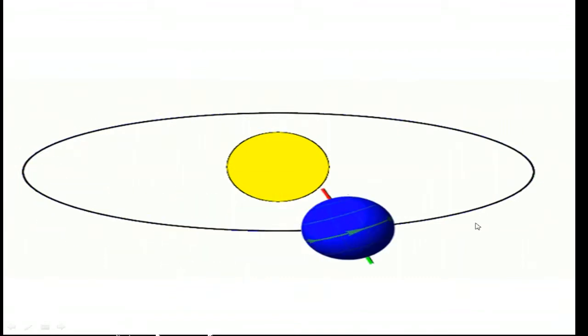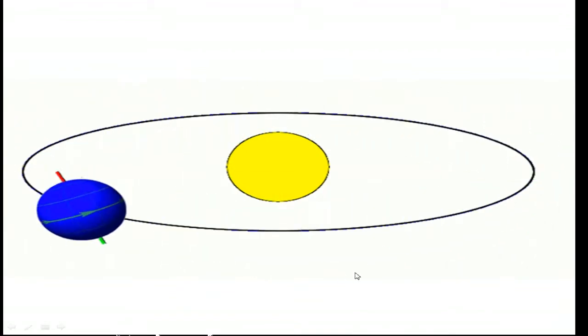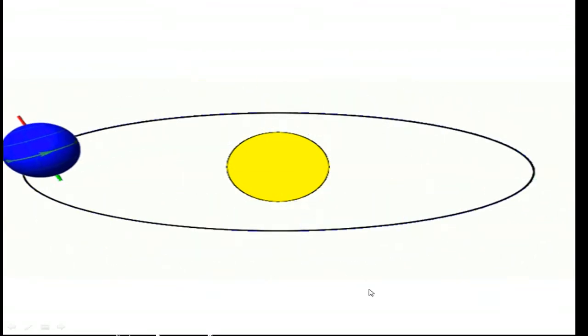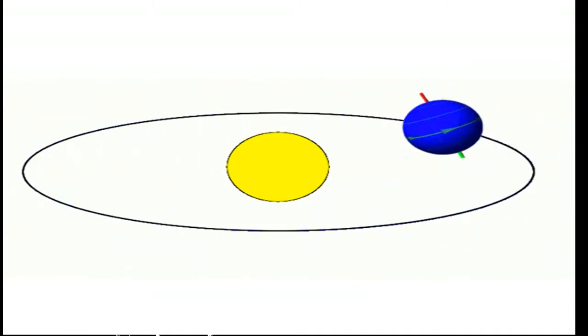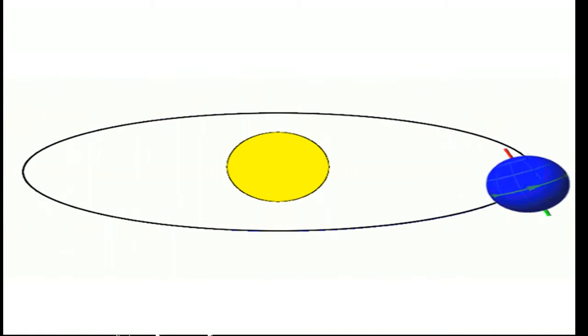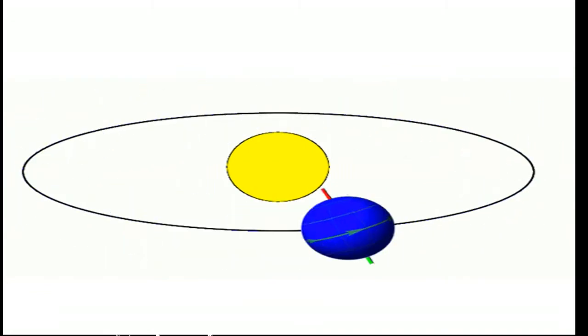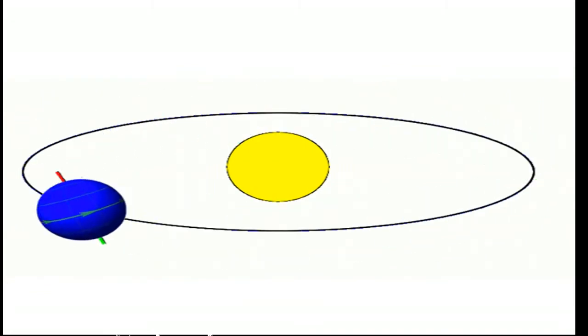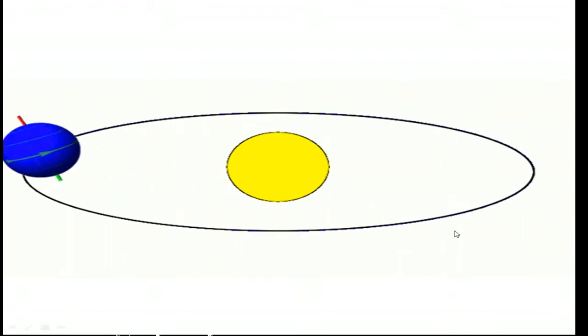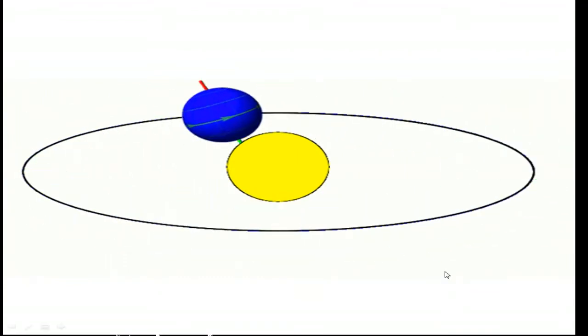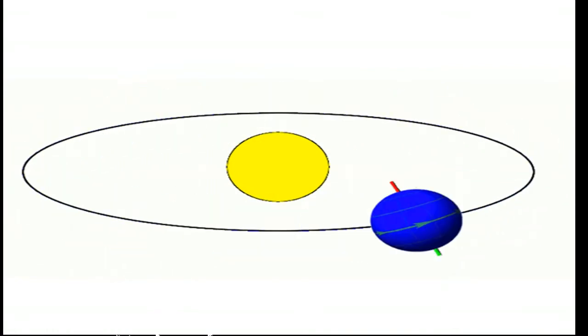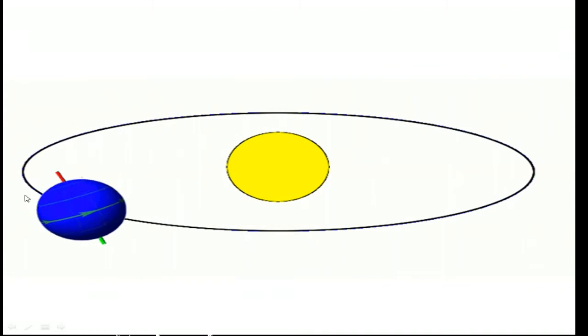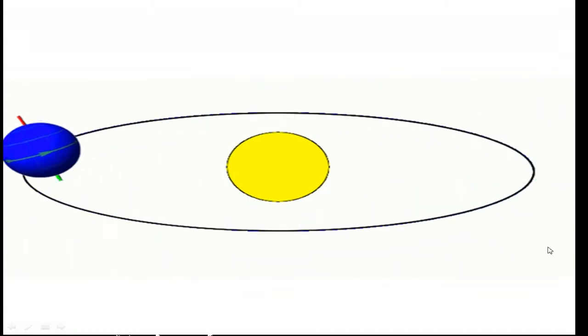the orbit of the Earth, the elliptical path. And then you also notice a line going to the North and South Pole. That would be the axis of rotation of the Earth. It's rotating about the axis of rotation as it orbits around the sun. One full rotation takes 24 hours, and one full orbit around the sun takes one year.